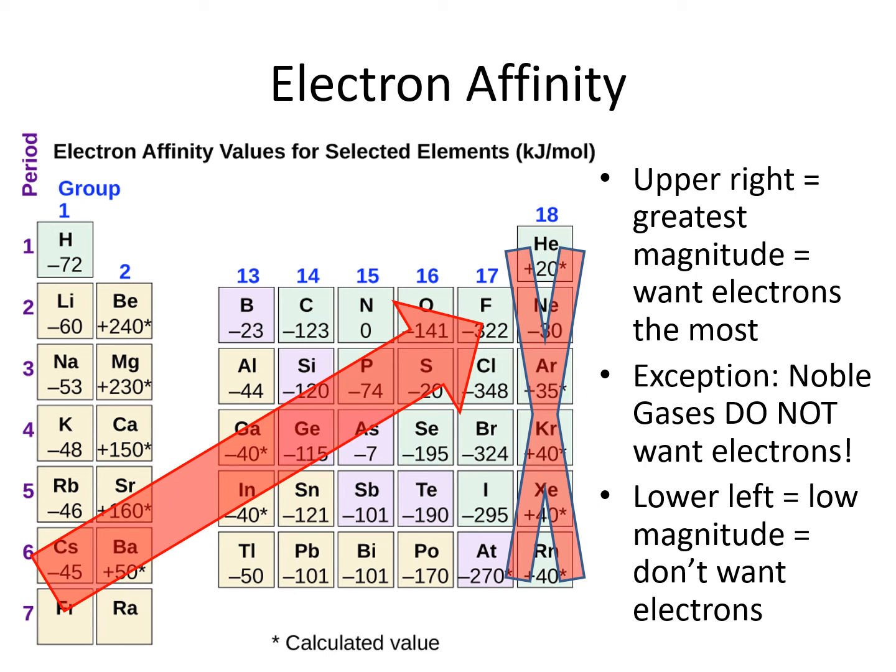The magnitude of the electron affinity decreases down a column in the periodic table, because the electron that is added is going into a larger shell that feels less attractive force from the nucleus.